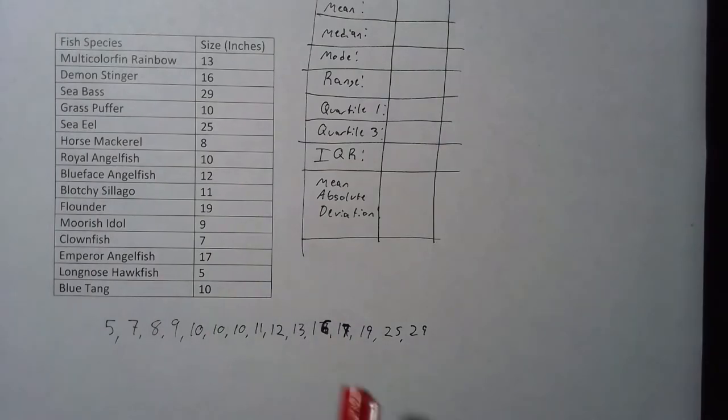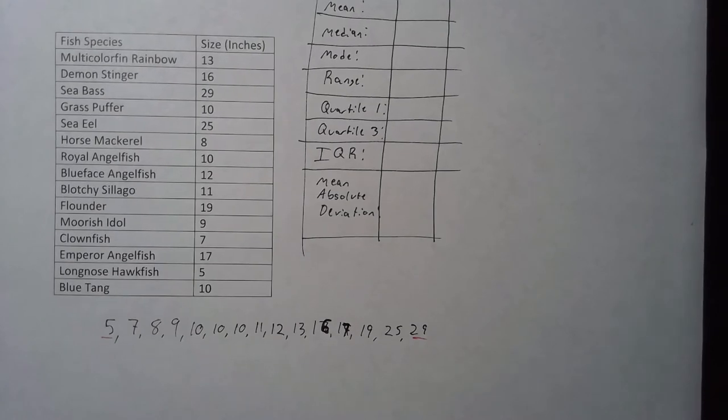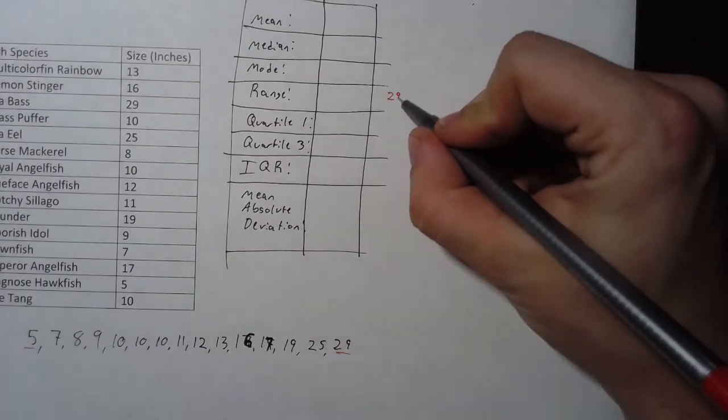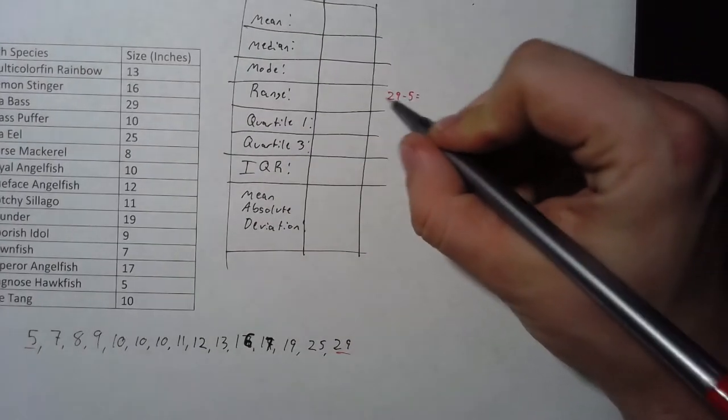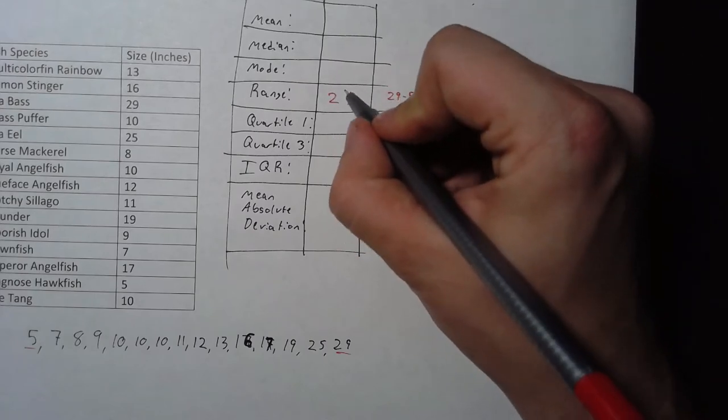For starters, let's go ahead and find the range. That's going to be the largest number and the smallest number taken away from each other. So we're just going to subtract 29 minus 5. That's going to give me 24. That's my range, 24.